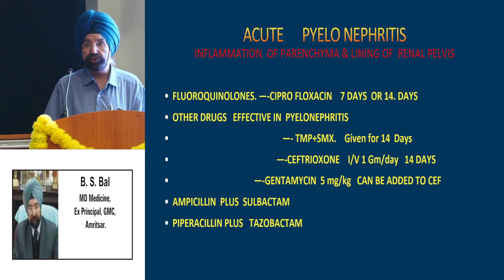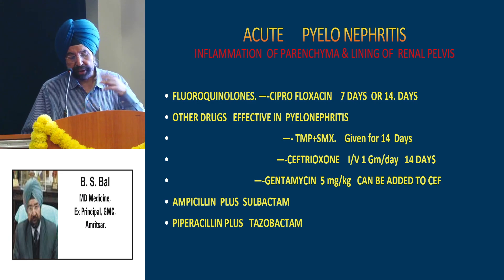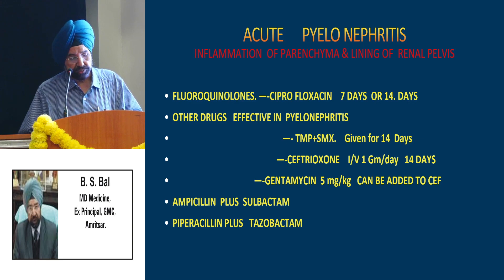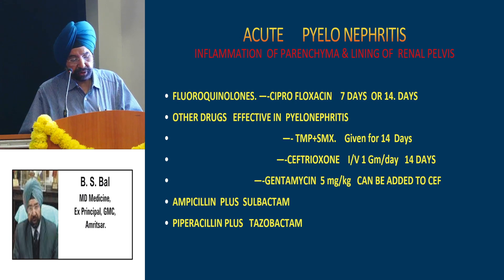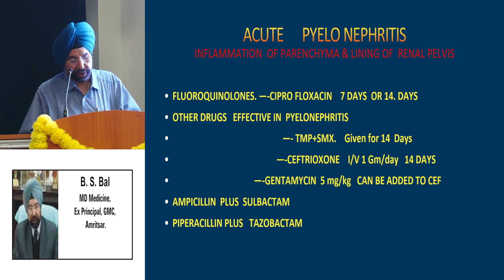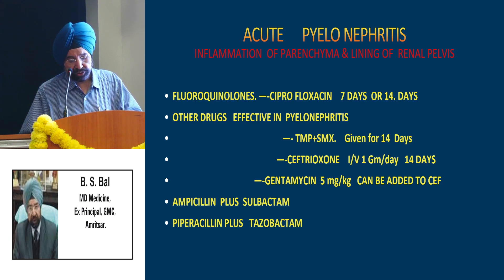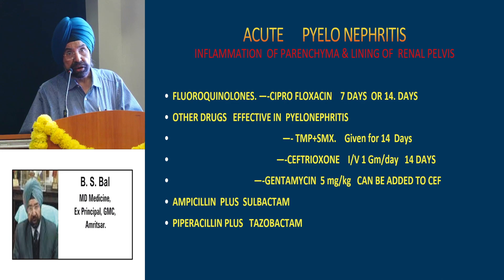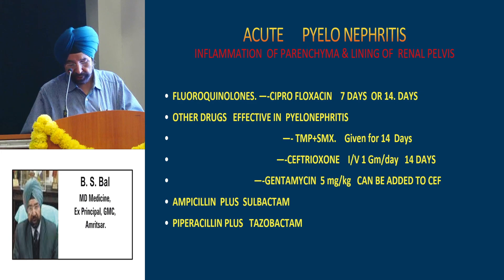For treatment of acute pyelonephritis — inflammation of the parenchyma and lining of the renal pelvis — fluoroquinolones are the preferred drugs. Ciprofloxacin can be used for 7 to 14 days. Other effective drugs include trimethoprim-sulfamethoxazole combination for 14 days. If the patient is admitted, IV drugs like ceftriaxone 1 gram IV per day for 14 days can be used. Gentamicin 5 mg per kg body weight can also be given. Reserved drugs like ampicillin-sulbactam or piperacillin-tazobactam can also be used depending on the culture report.